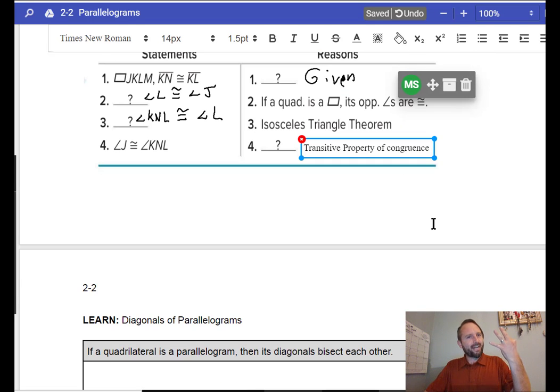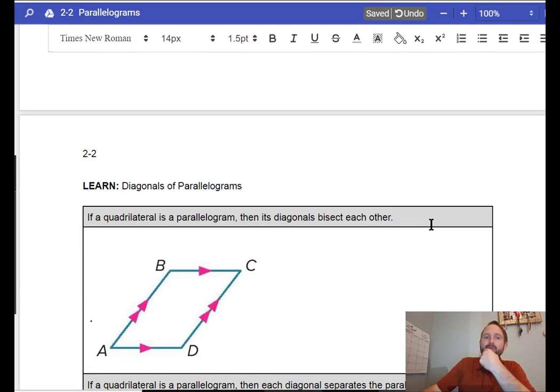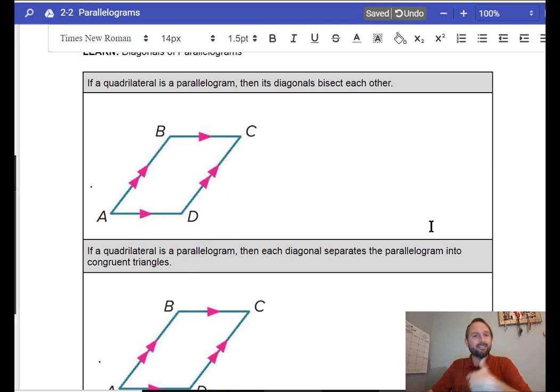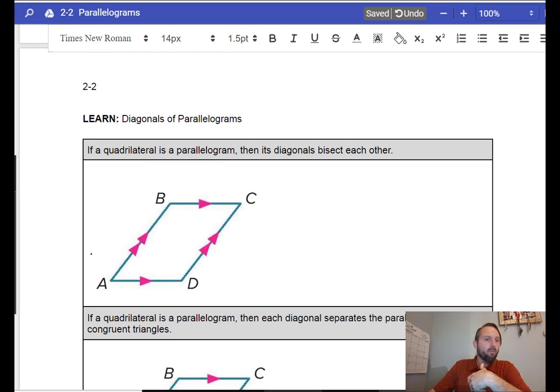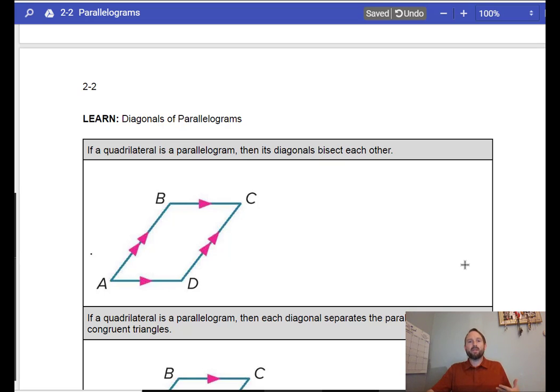Let's go on to page 5, 3, 3. Learn the diagonals of a parallelogram. What are we talking about? So, if a quadrilateral is a parallelogram, then the diagonals are going to bisect each other.